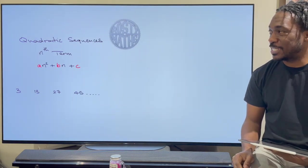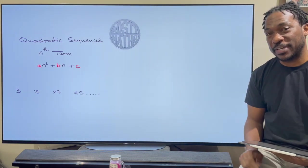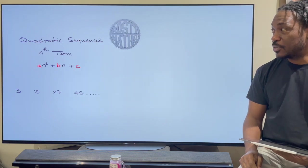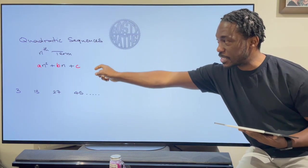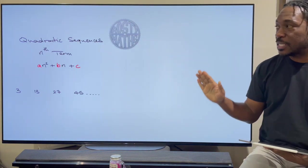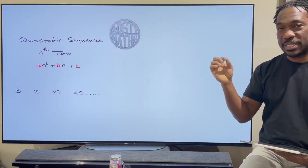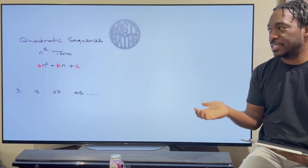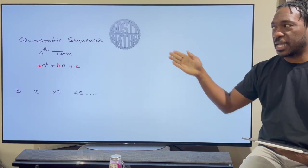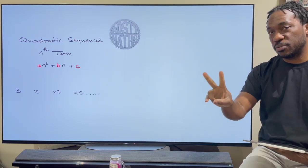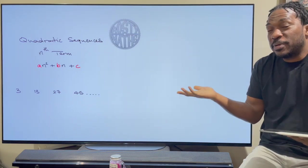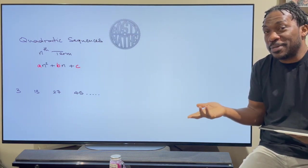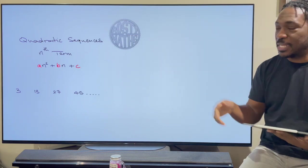So we are doing quadratic sequences today and we're going to find the nth term. Now you'll notice I've got my quadratic sequence set up right there. The a, b and c will have to be numbers or integers as they say. So stick with me to see how we work that out. I'm going to show you two methods, see which method you like and leave it in the comments below.